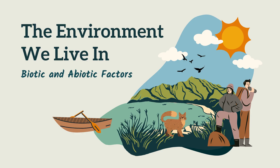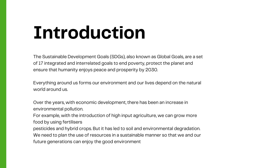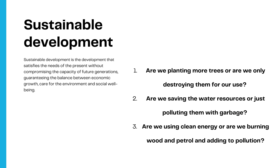Everything around us forms our environment and our lives depend on the natural world around us. Over the years with economic development there has been an increase in environmental pollution. For example, with the introduction of high input agriculture we can grow more food by using fertilizers, pesticides and hybrid crops, but it has led to soil and environmental degradation. Are we planting more trees or are we destroying them? Are we saving water resources or just polluting them with garbage? Are we using clean energy or are we burning wood, petrol and adding to pollution?